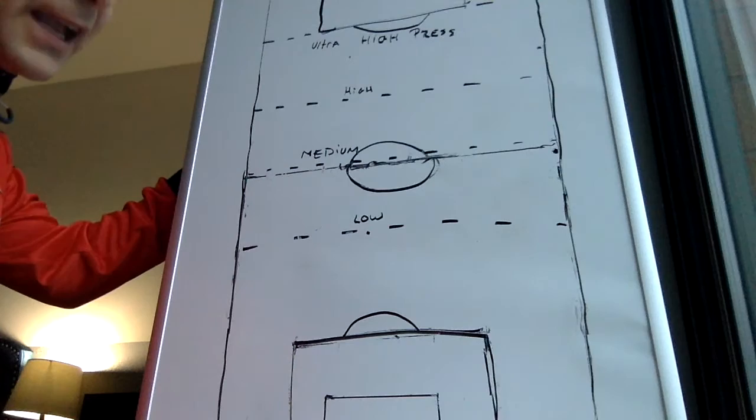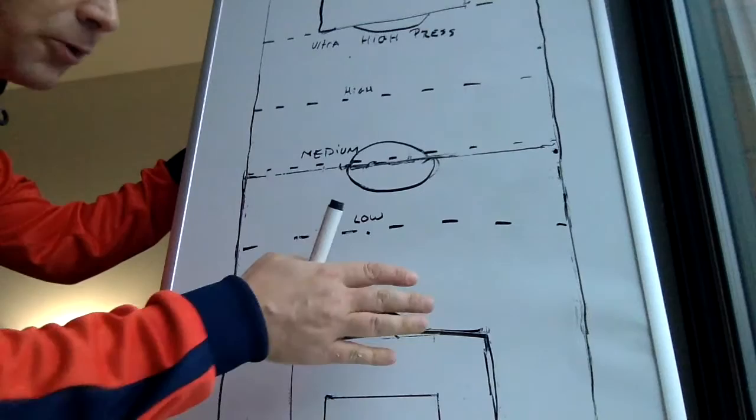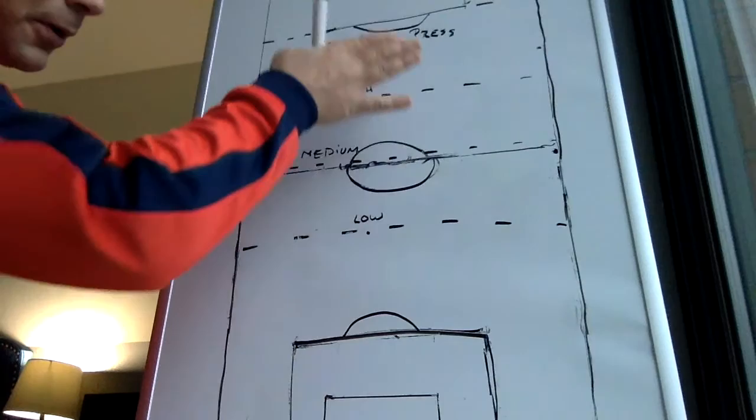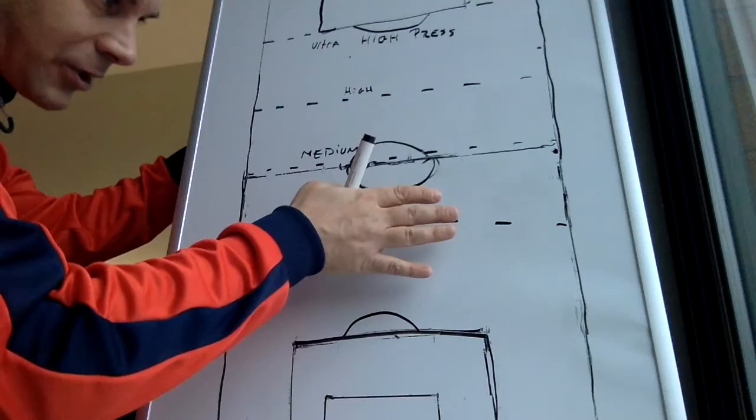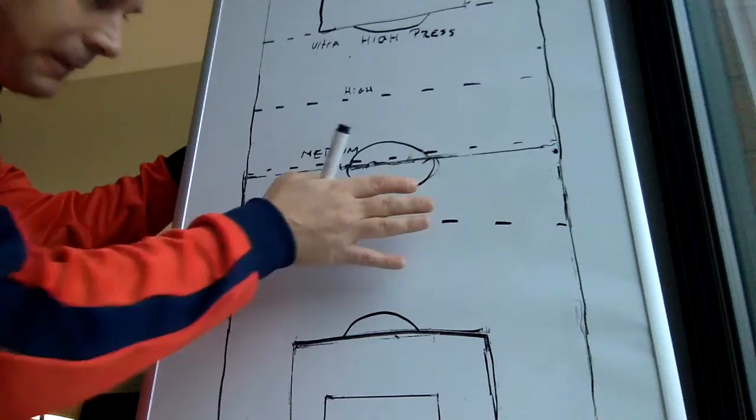Welcome to the second part of creating a game model and implementing a formation. In the first video we went over thirds of the field, our defensive third, middle third, attacking third. And we went through defensive organization, to attacking transition, to attacking organization, and then back to defensive transition and defensive organization.